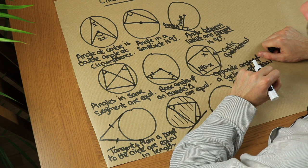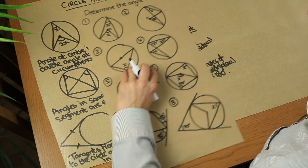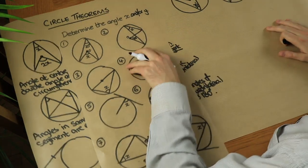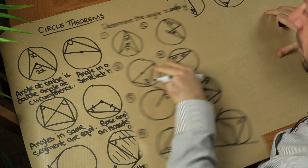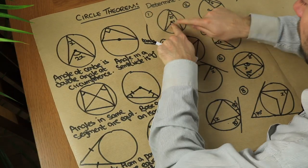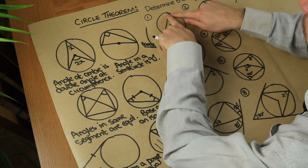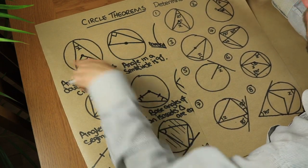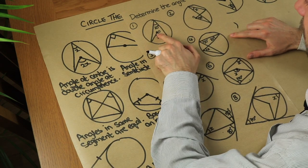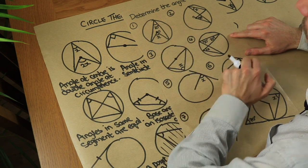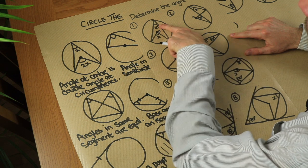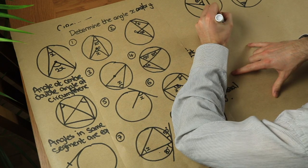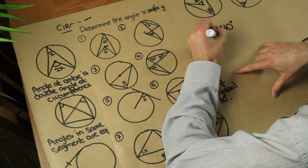There are two more circle theorems not in the main GCSE syllabus, so I won't cover them here, and I won't prove any of these — proofs can be found in my slides. Let's do a bunch of examples to find angle x and/or y. In the first diagram, we have an angle at the centre x and an angle at the circumference. By the first circle theorem, the angle at the centre is double the angle at the circumference, so if the circumference angle is 20 degrees, the centre angle is 40 degrees.